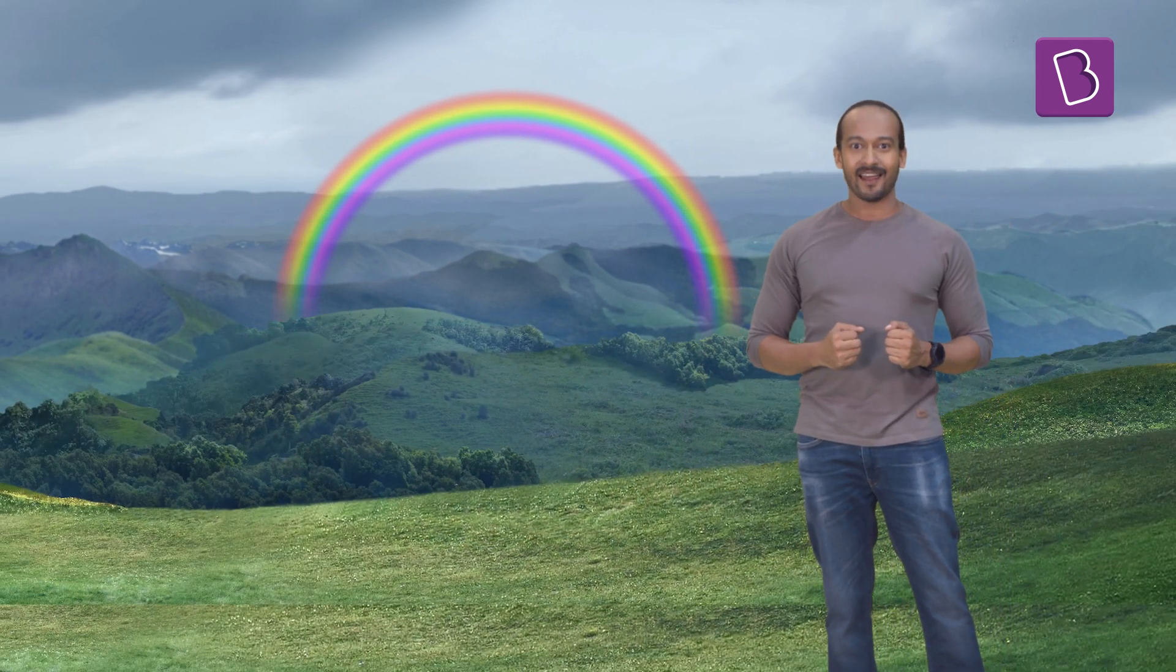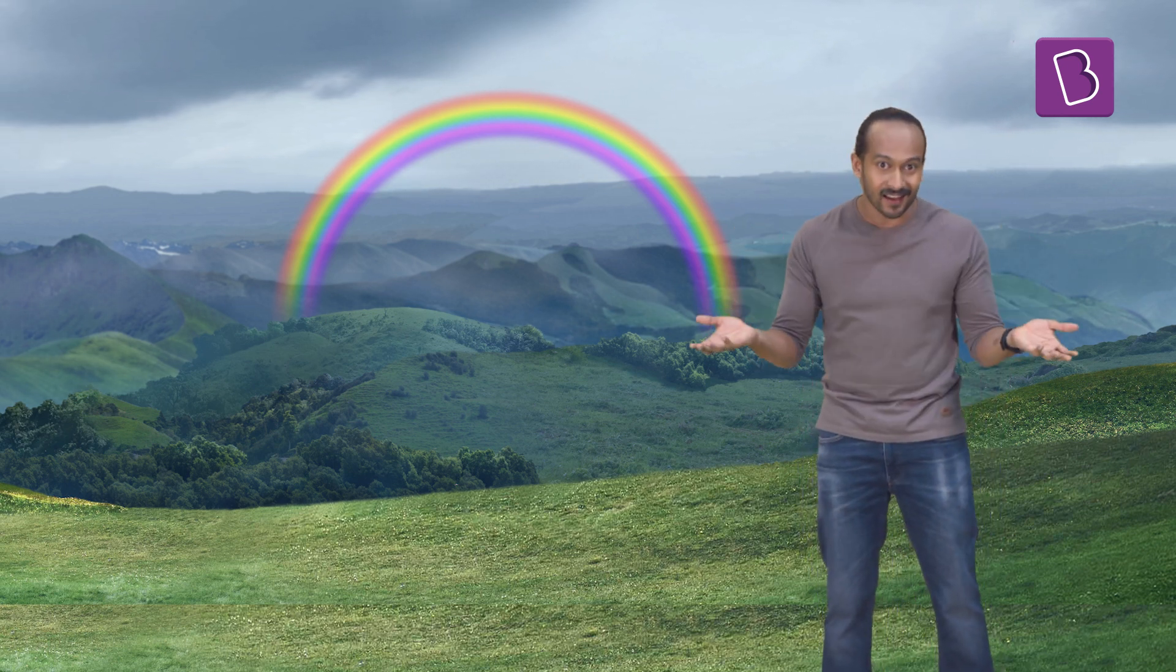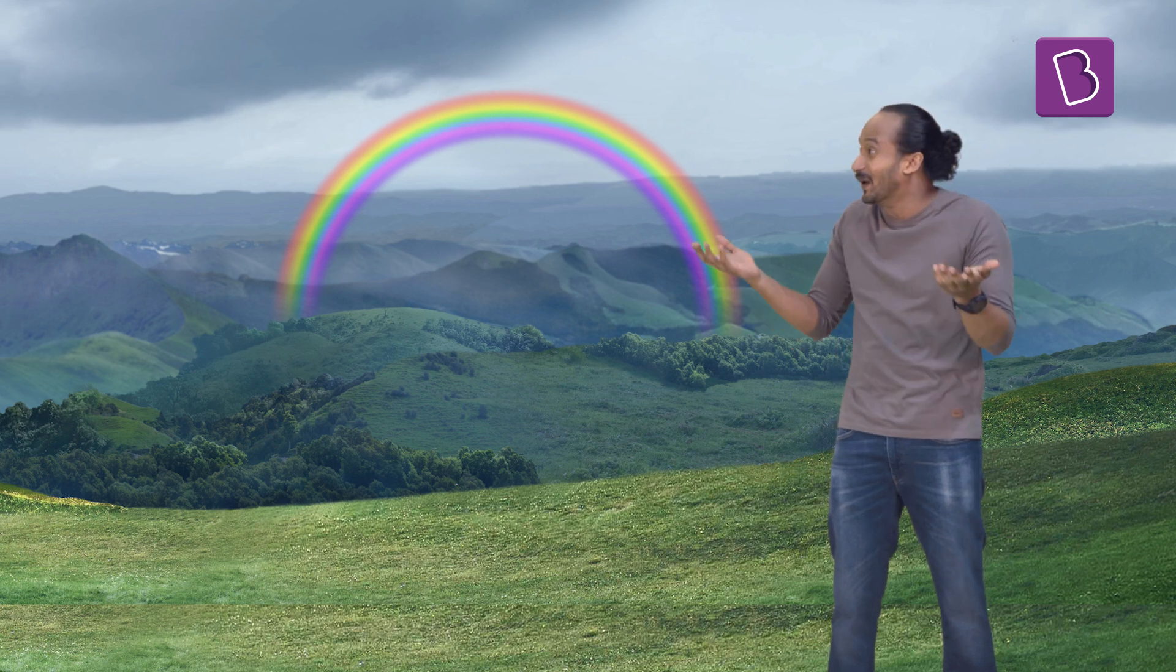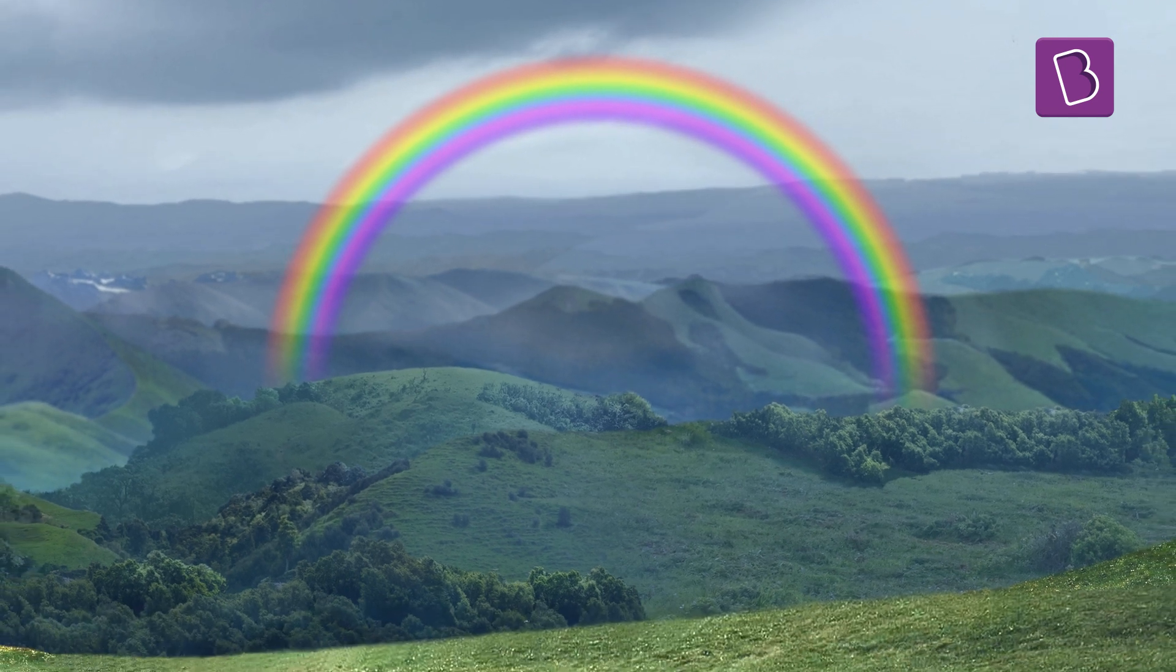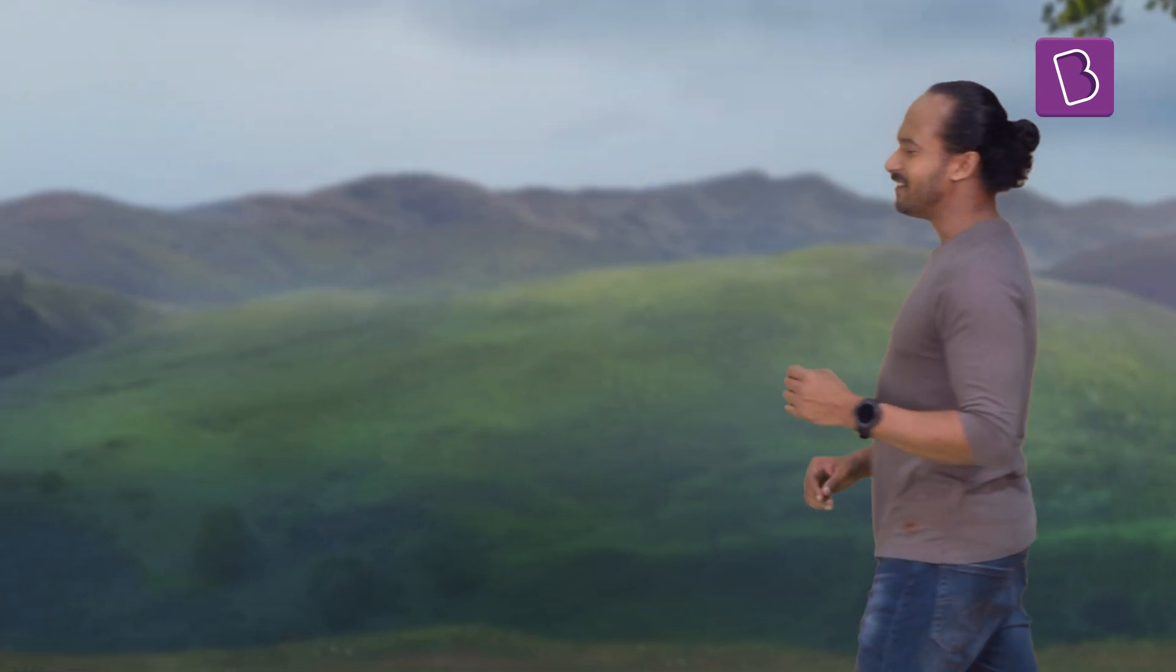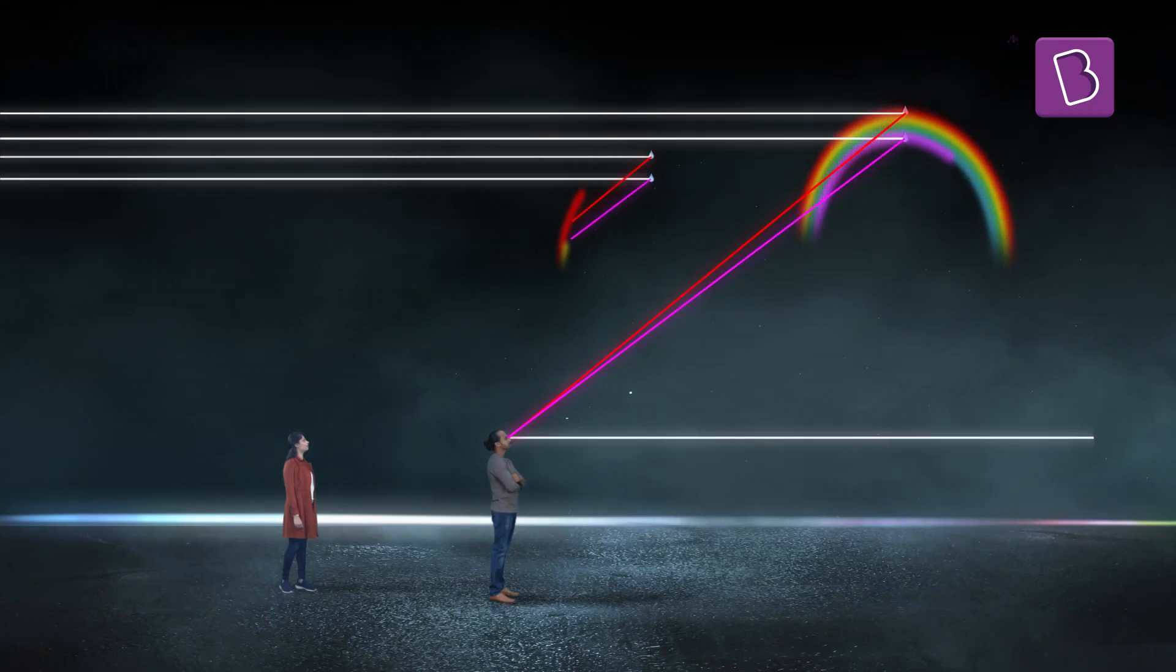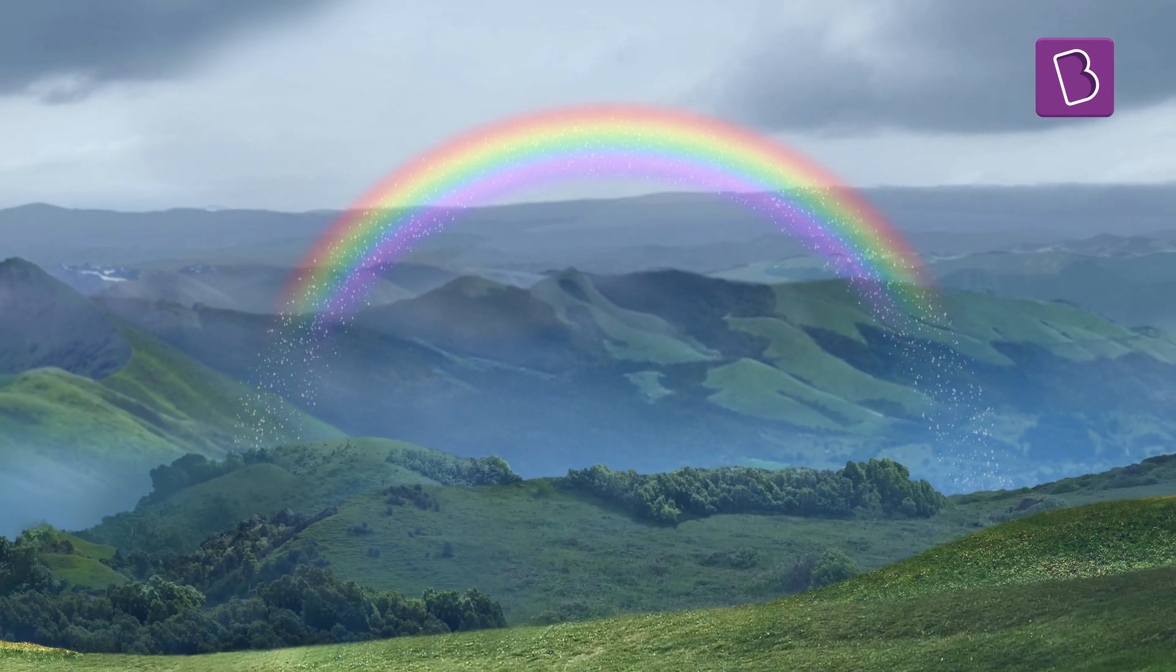Now you know: not only do rainbows not have an end since they're circles, they actually in a sense don't even exist. They are optical marvels that form when sunlight, atmospheric conditions, and the viewer's position are just right. Someone standing next to you will be seeing a rainbow formed by other water droplets—it's not the same one you're seeing. So don't be sad that you can't get to the end of a rainbow, because every rainbow you see is a special rainbow made just for you.